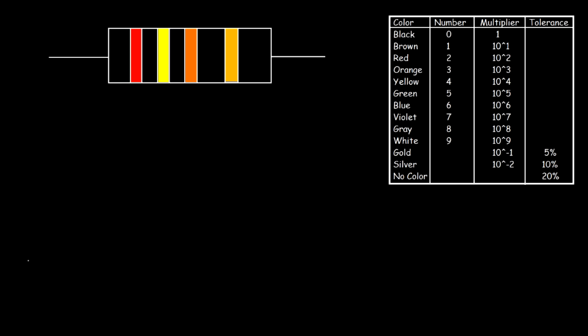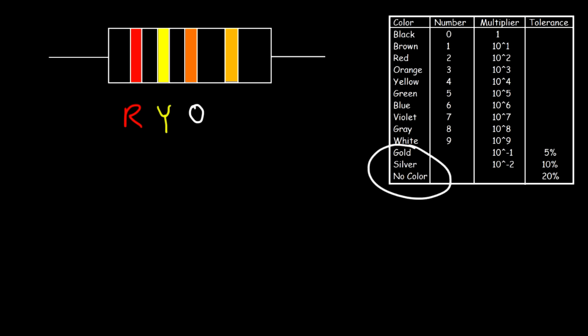So the first color is red. The second color is yellow. The third color, let's just say it's orange. The last color is for the tolerance — it's usually either gold, silver, or no color. So let's say this is gold.